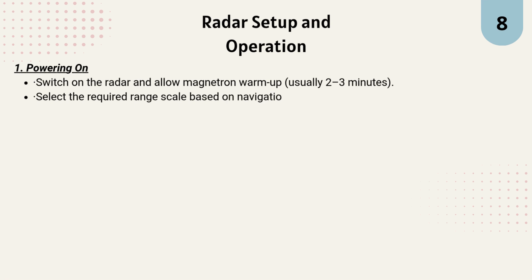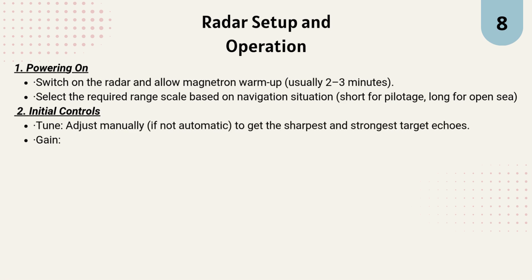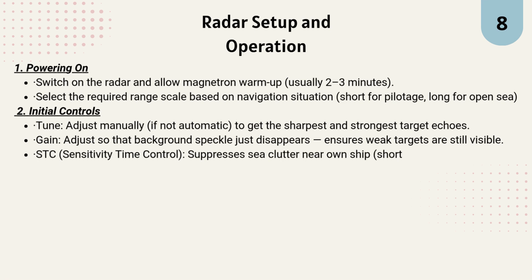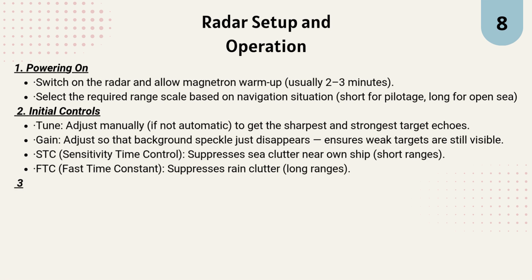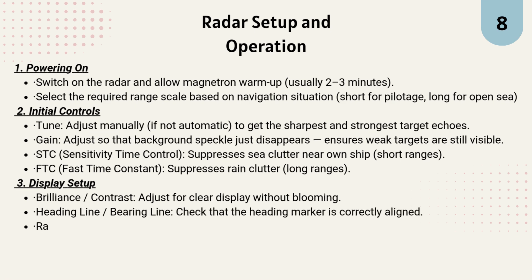The next topic is radar setup and operation. Step 1 — Power on: Switch on the radar, warm up for 2–3 minutes, and select a range scale — short for coastal navigation, long for open sea. Step 2 — Initial controls: Tune manually for the sharpest echoes. Adjust gain so weak targets remain visible but background speckle disappears. Use STC to suppress sea clutter near the ship, and FTC to suppress rain clutter at long ranges.